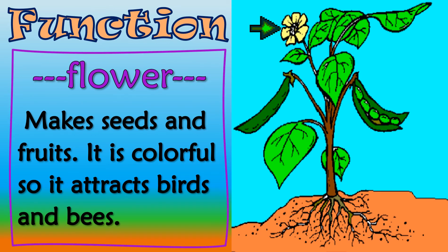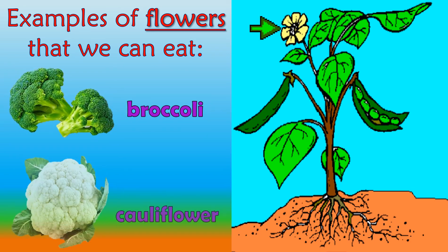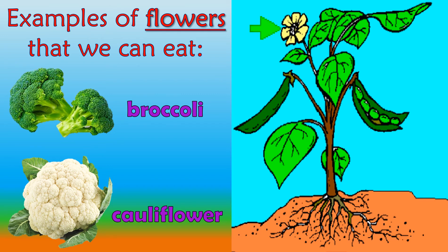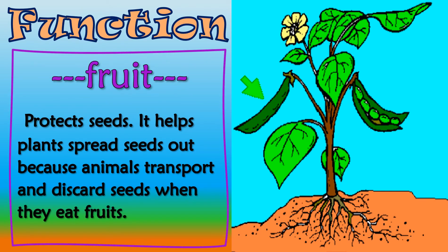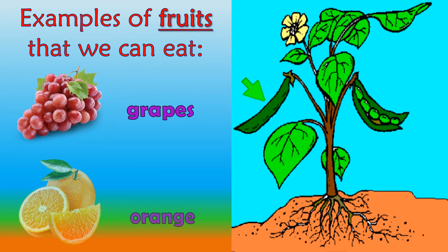Flowers make seeds and fruit. They are colorful so they attract birds and bees. Some examples of flowers that we can eat are broccoli and cauliflower. Fruit protects seeds and helps plants spread seeds because animals transport and discard seeds when they eat fruit. Some fruits we can eat are grapes and oranges.